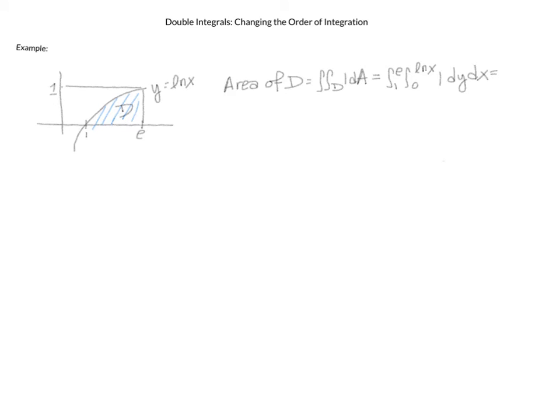Here is our example problem. We have this domain d which goes from x equals 1 to e, and y goes from 0 up to natural log of x. So the way I explained it, it seems very natural then that if we wanted to know the area of d, we would integrate the function 1, and we would integrate x from 1 to e and y from 0 to natural log of x. This is a very natural thing to do because y is written in terms of x, so it seems like an obvious way to set up our integral.